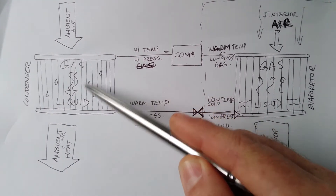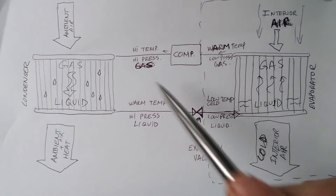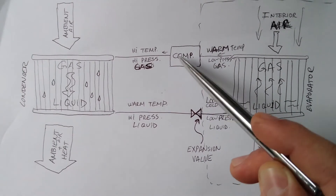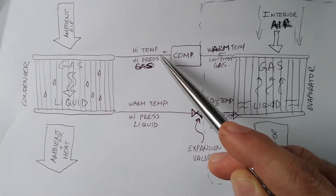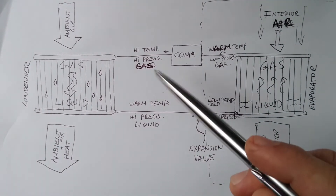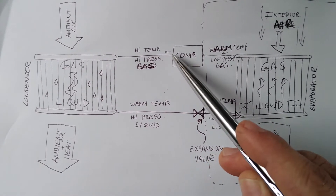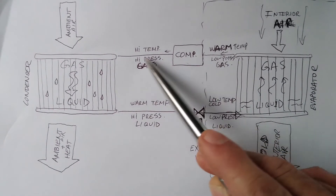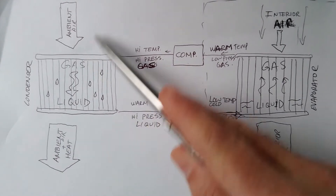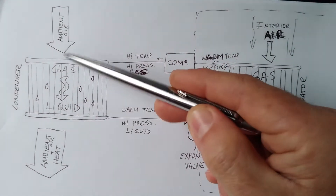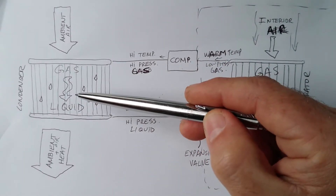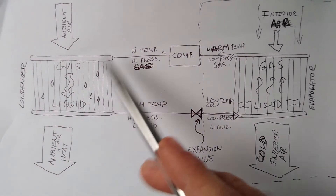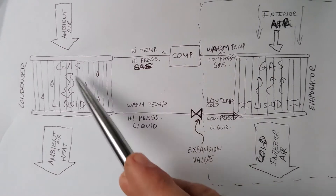Starting from the compressor: it's a mechanical pump that compresses the refrigerant gas, raising its pressure and also raising its temperature. So now you have a pipe with high-temperature, high-pressure gas flowing toward the condenser. Ambient air is blown through this heat exchanger — the condenser — and as it passes through, it draws heat away from the hot gas.